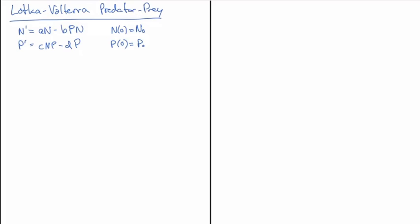That system is what we're looking at here, which is n prime equal to an minus bpn. You can see from this equation that if the other species p is at a zero population size we have straight-up growth, so that would be the prey population. And if n is equal to zero, p prime is equal to cnp minus dp, so when n is equal to zero the p population just dies out — it's dependent on n for its survival. That's the predator population.